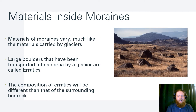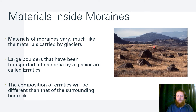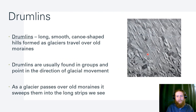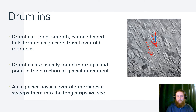The materials inside moraines vary and are unsorted. Large boulders transported into an area get a special name — erratics. The composition of erratics will be different from the surrounding bedrock since they've been carried a long way. Drumlins are long, smooth, canoe-shaped hills formed as glaciers travel over old moraines, dragging them out into these structures. They're usually in groups, all pointing in the same direction, which tells us the direction the glacier was moving.